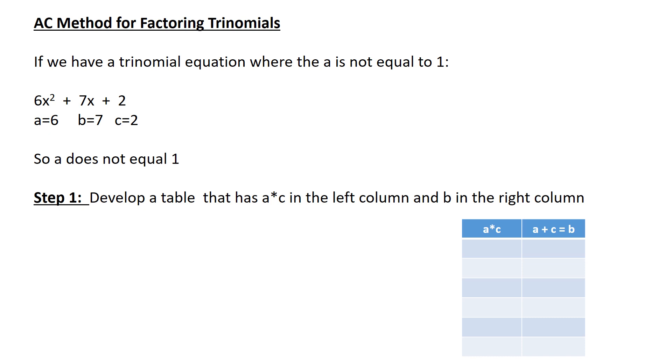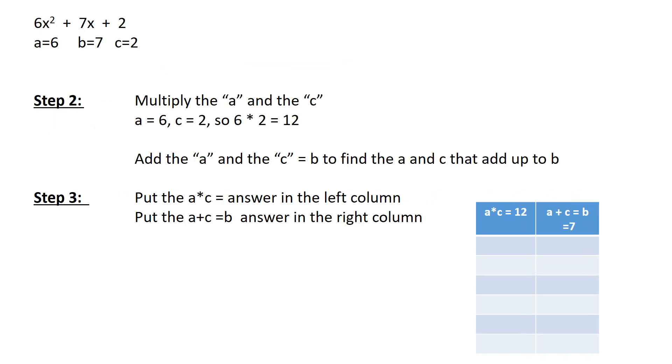Similar to the PQ method, we start out with a table. But in this case, on the left-hand side, we have A times C. And on the right-hand side, we have A plus C equal to B. Remember, we have A times C on the left and A plus C equals B on the right.